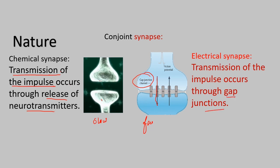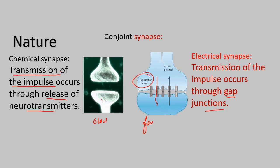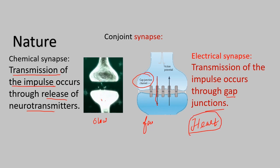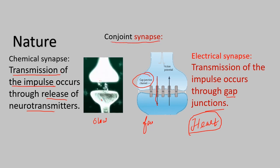In electrical synapse, we have neurotransmitter that binds the receptor but there is no action potential. This is seen in the heart muscle — we use the gap junction, which is faster. In a large area, there is electrical synapse. This is called conjoint synapse — partly chemical, partly electrical.